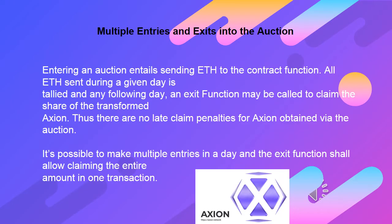Multiple entries and exits into the auction: entering an auction entails sending ETH to the contract function. All ETH sent during a given day is tallied, and on any following day an exit function may be called to claim the share of the transformed Axion. There are no late claim penalties for Axion obtained via the auction. It's possible to make multiple entries in a day, and the exit function allows claiming the entire amount in one transaction.